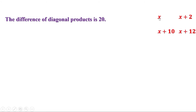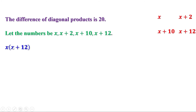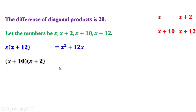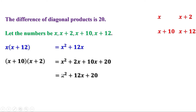Now let us find the diagonal products. x into x plus 12: x into x is x square, x into 12 is 12x. So this equals x square plus 12x. Now the second diagonal product, x plus 2 into x plus 10: x into x is x square, x into 2 is 2x, 10 into x is 10x, 10 into 2 is 20. Therefore this equals x square plus 2x plus 10x plus 20, which is x square plus 12x plus 20.